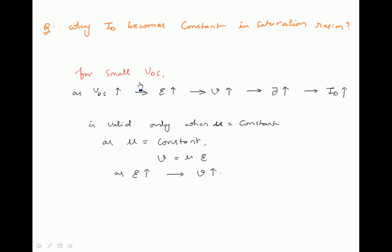In the active region, VDS is small and less than VGS minus VT. As VDS increases, electric field in the channel increases, drift velocity of charge carriers in the channel increases, current density of charge carriers increases, and so current due to charge carriers increases.